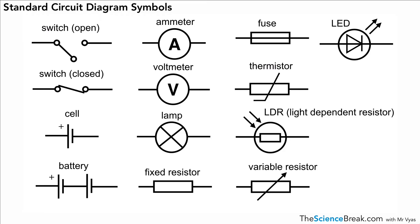This one over here is an LED, otherwise known as a light emitting diode. You can see the arrows pointing outwards, so that's giving out light — that's how you could tell the difference between that and the LDR.